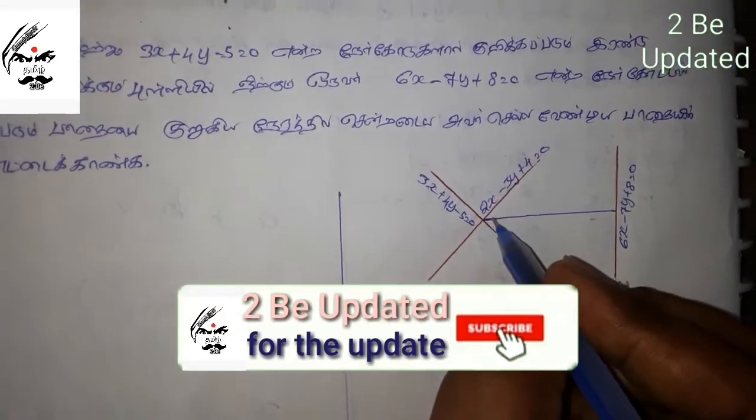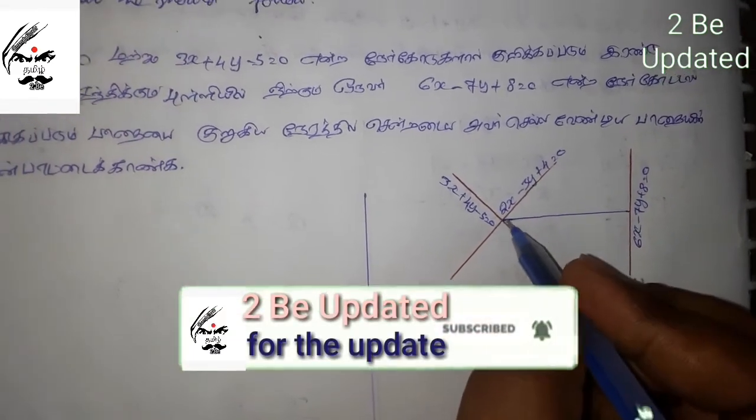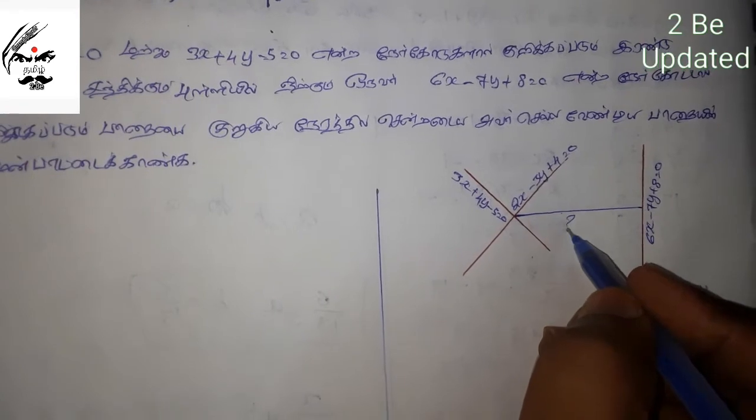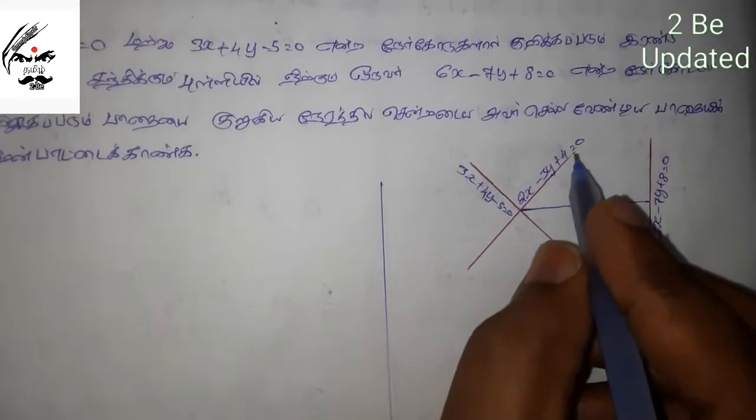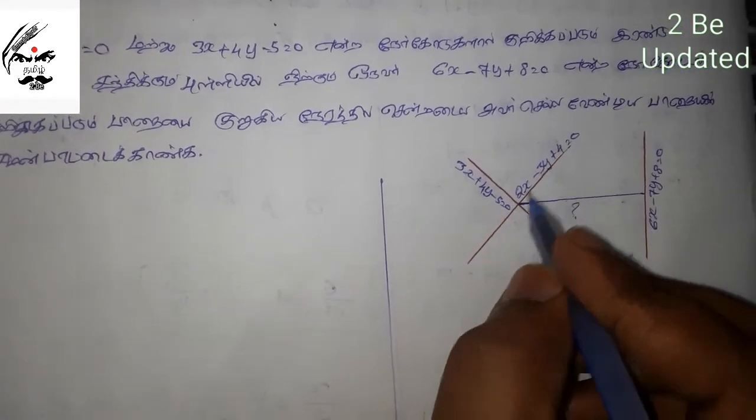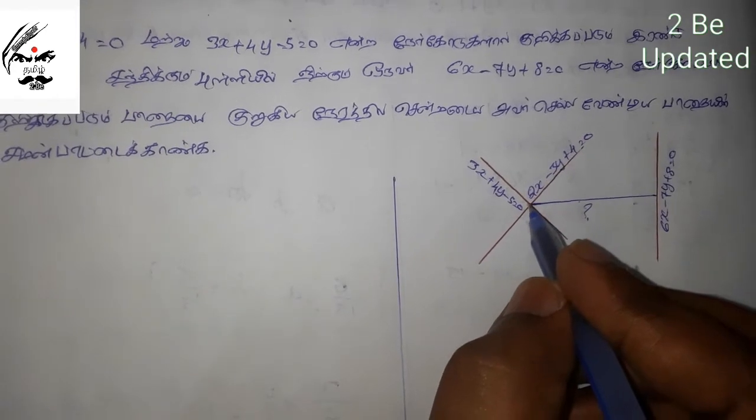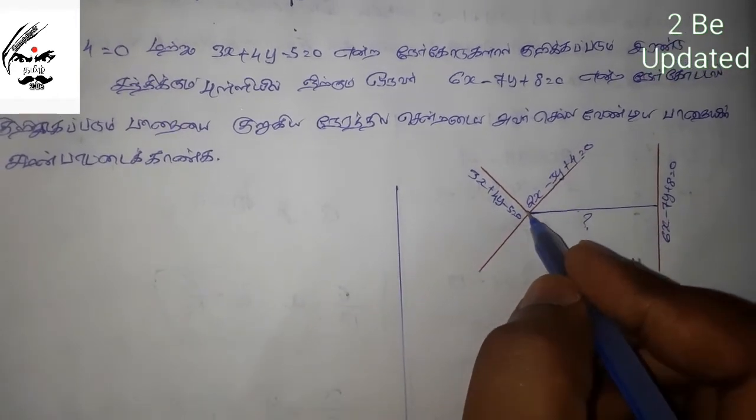First, let's find the intersection point. To find the intersection, we need to solve the two equations. We can add the two equations.